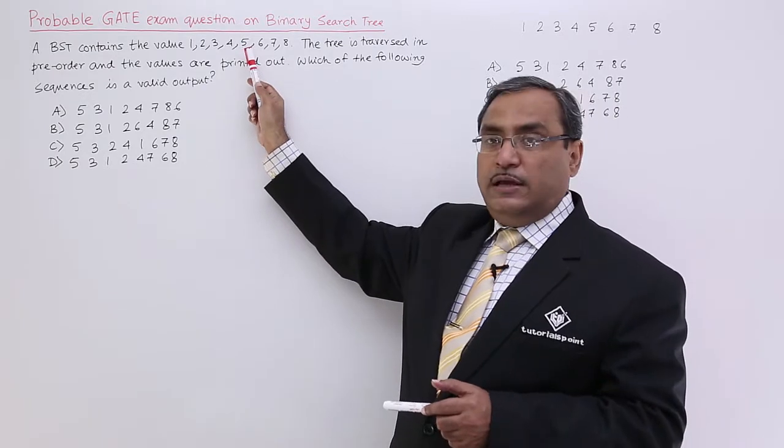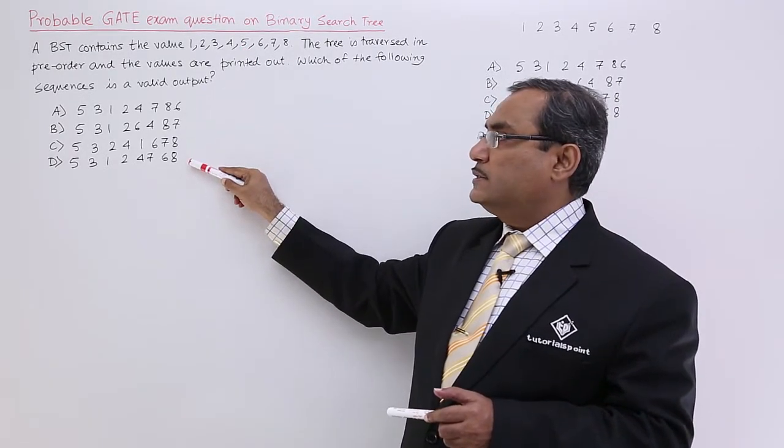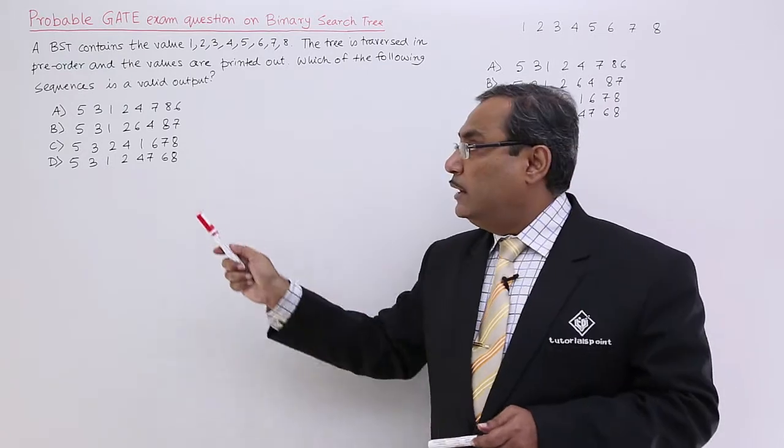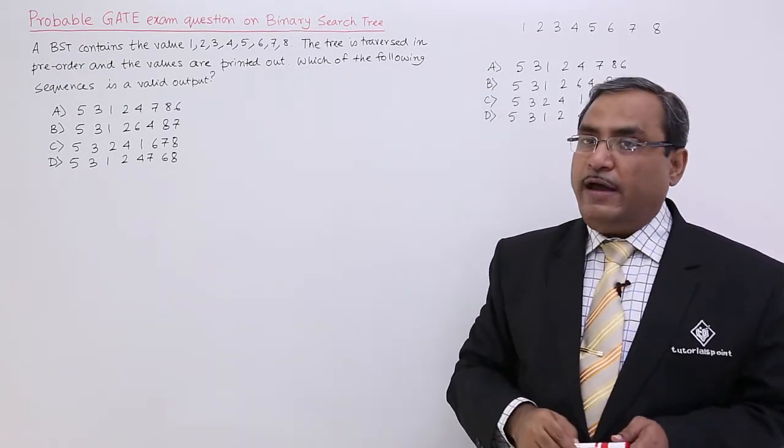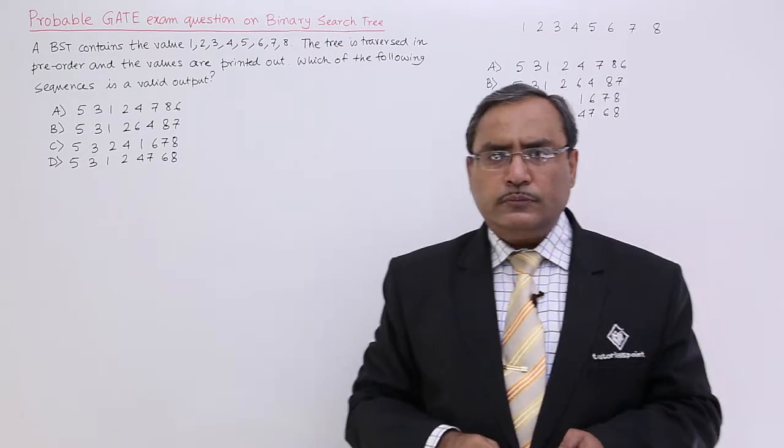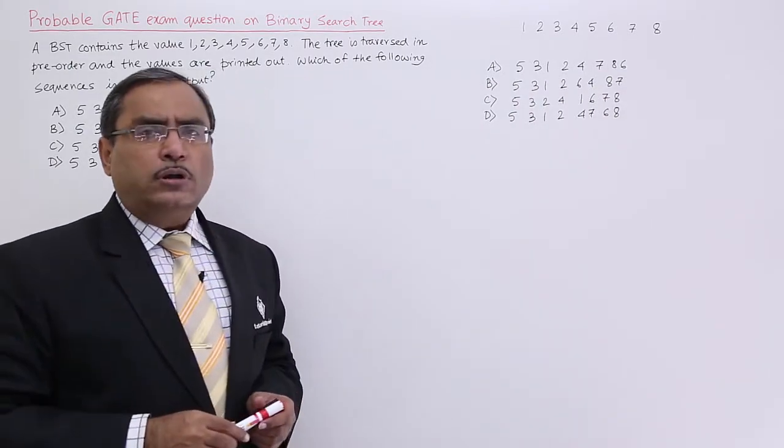One in-order traversal is given and four pre-order traversals are given. I shall have to tell which pre-order traversal is the valid one. So how to solve this one?